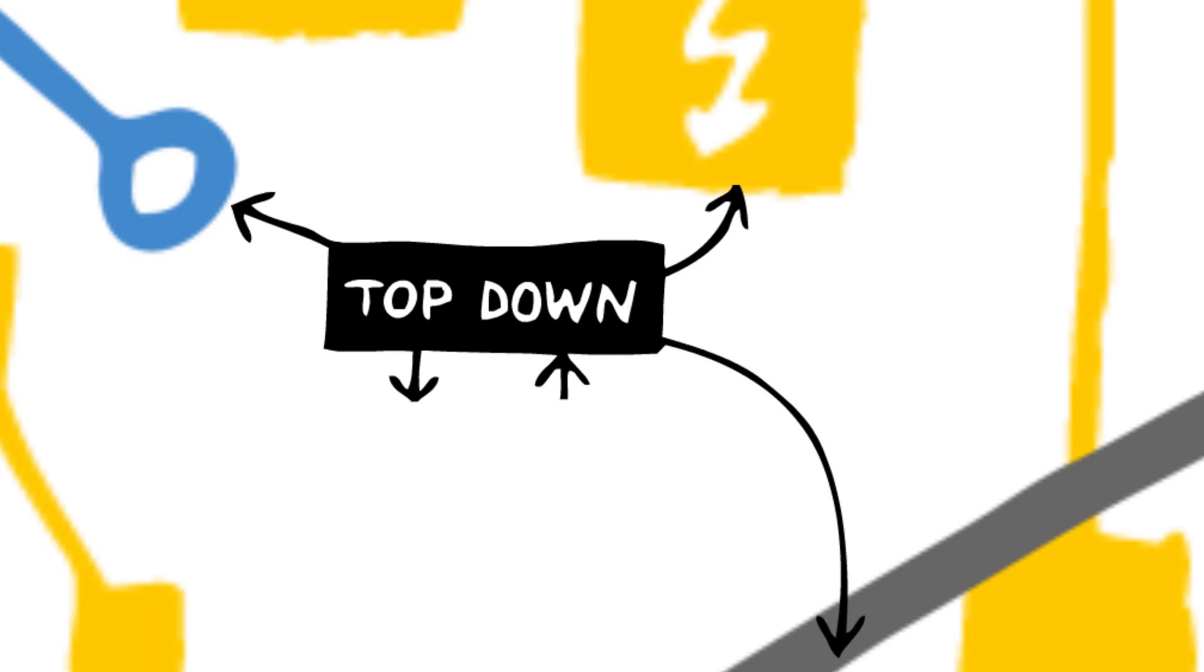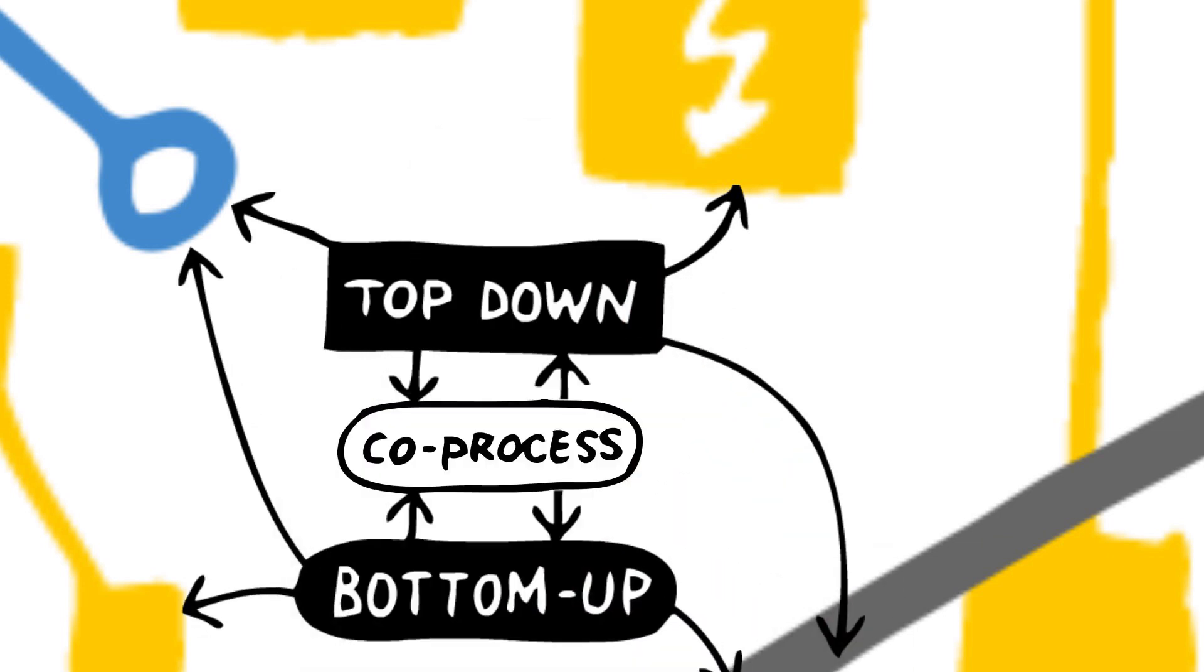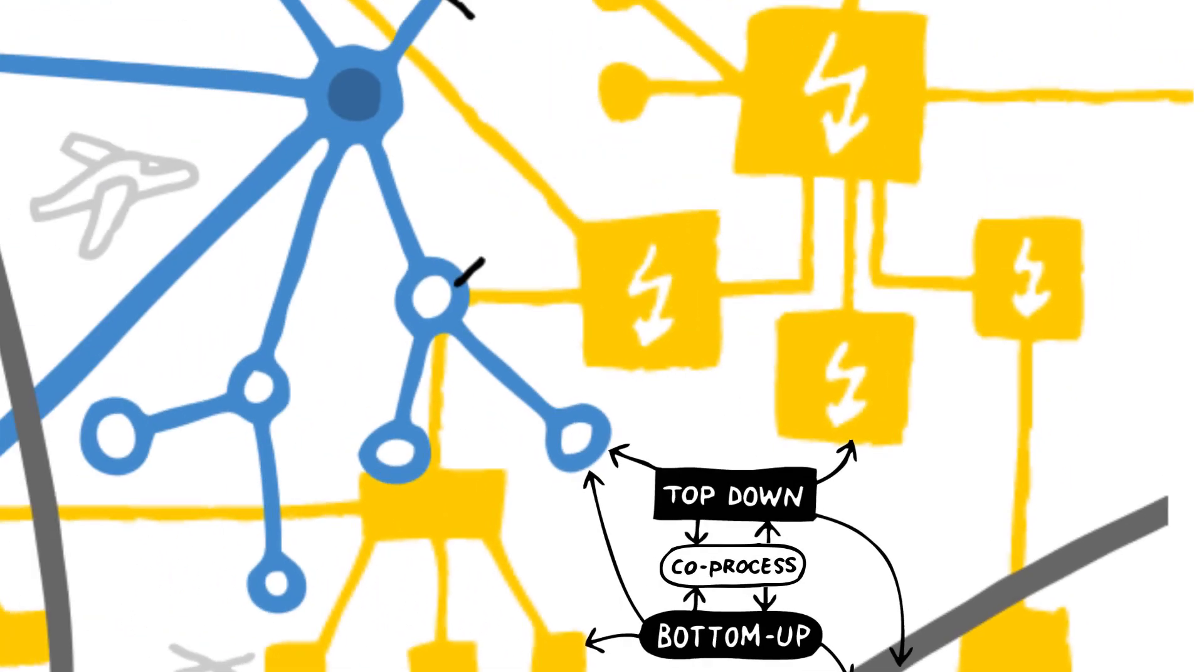The design process must become what we call a co-process. This means that systems and services are shaped simultaneously by a bottom-up process of emerging technological innovation and a top-down regulatory and design process.